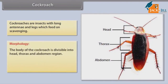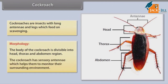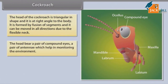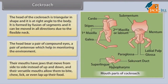Morphology: The body of the cockroach is divisible into head, thorax, and abdomen regions. The cockroach has sensory antennae which help monitor the surrounding environment. The head is triangular in shape and at right angles to the body. It is formed by fusion of segments and can be moved in all directions due to the flexible neck. The head bears a pair of compound eyes and a pair of antennae. Their mouth has jaws that move from side to side instead of up and down, and their versatile mouth allows them to feed on a wide range of food.